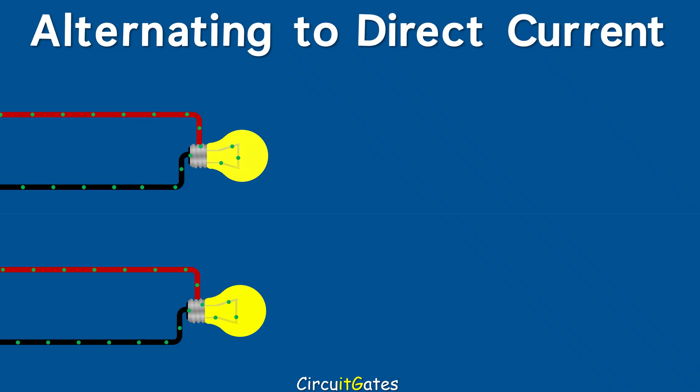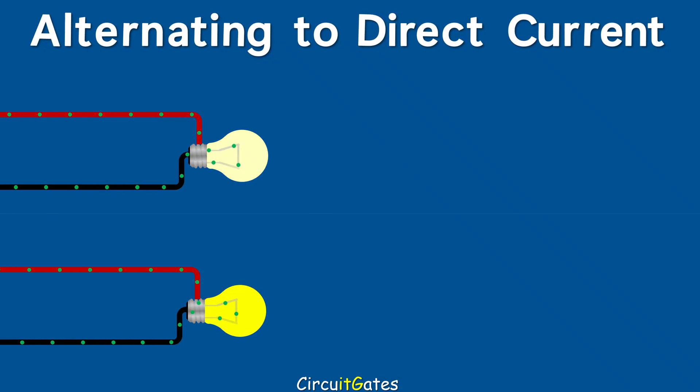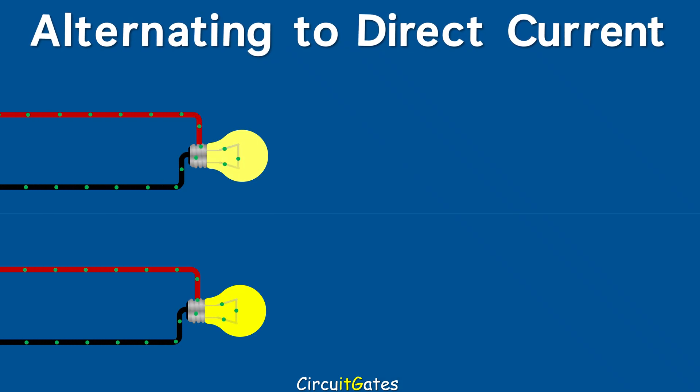Hi guys, this video is about how to convert alternating current electricity to direct current electricity. Let us start by understanding the differences between AC electricity and DC electricity.